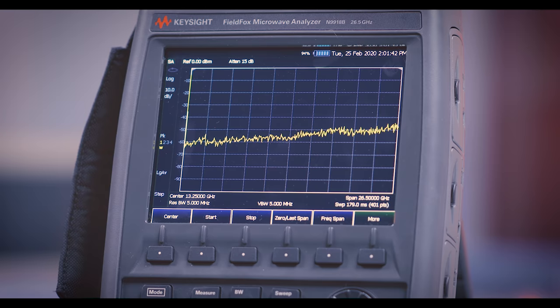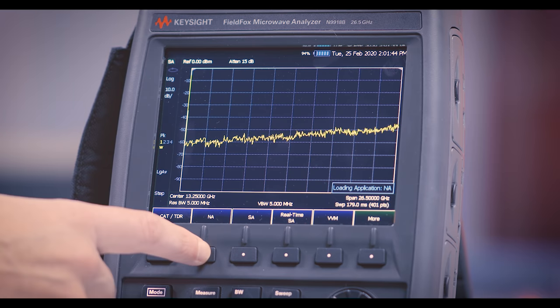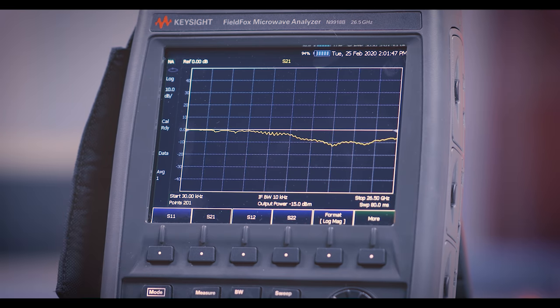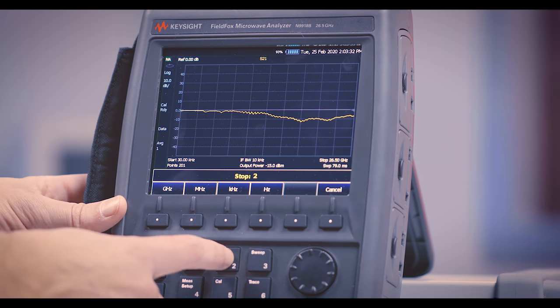So let's put the field fox into network analyzer mode, set it up for an S21 measurement and scale our signals so we're running a sweep from 30 kilohertz up to 2 gigahertz.